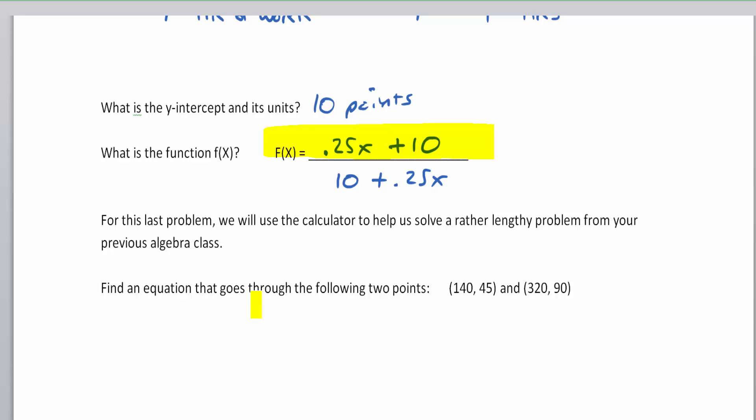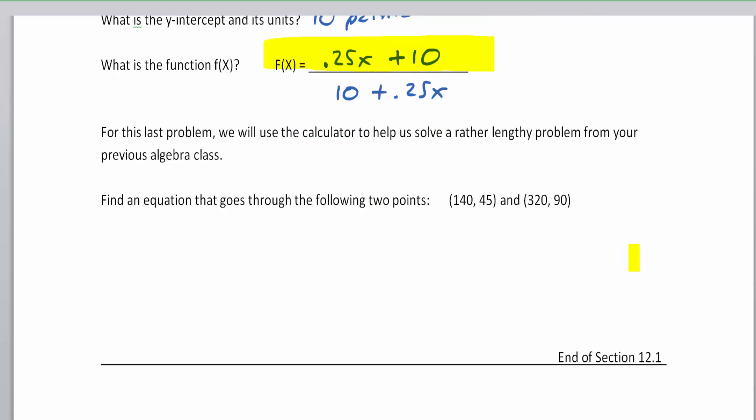For the last problem in this video, we're just beyond college algebra and we need to get answers here. We're going to use a calculator to help us solve a rather lengthy problem from your previous algebra class. Find an equation that goes through the following two points. A student worked 140 hours and got a 45% in the class. This student worked for 320 hours and got a 90%. Let's find an equation that fits those lines.